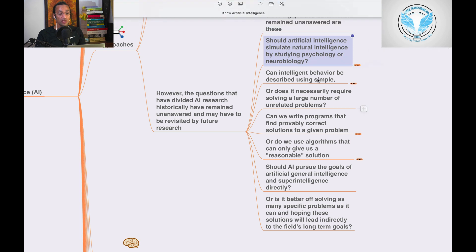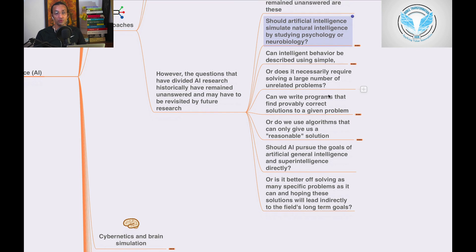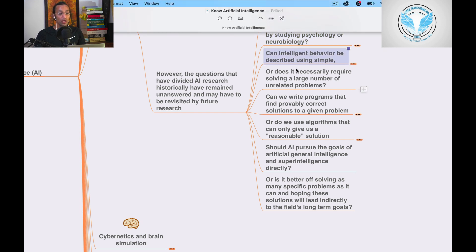These are the challenges, these are the questions which we also need to question and do research. Can intelligent behavior be described using simple, elegant principles such as logic and optimization?